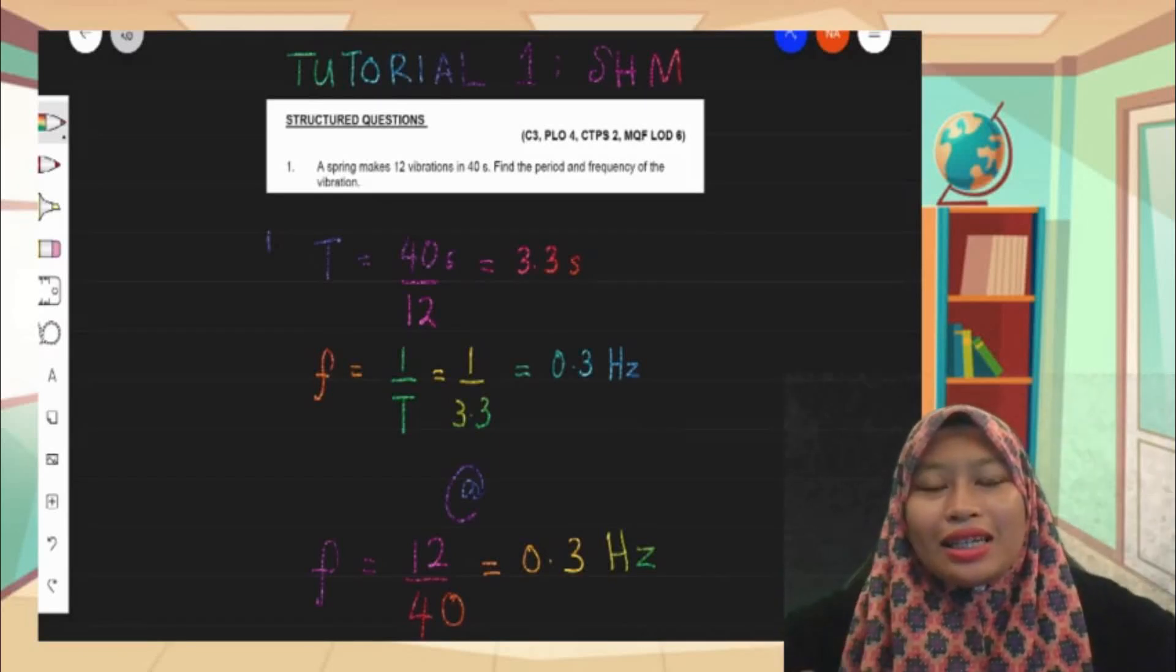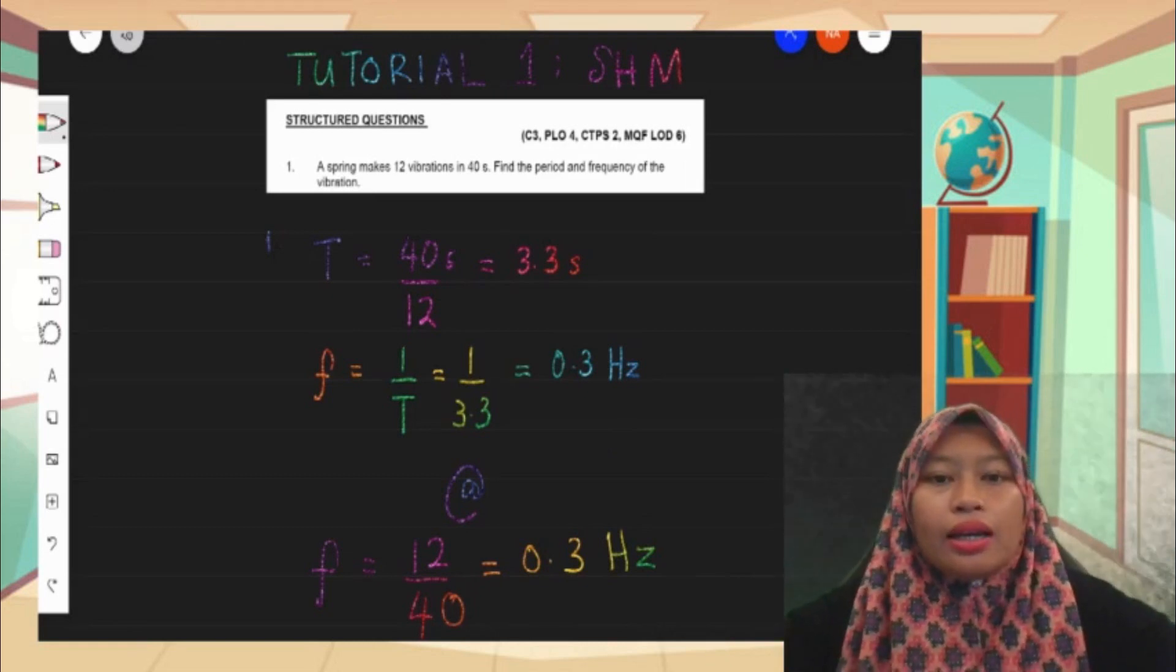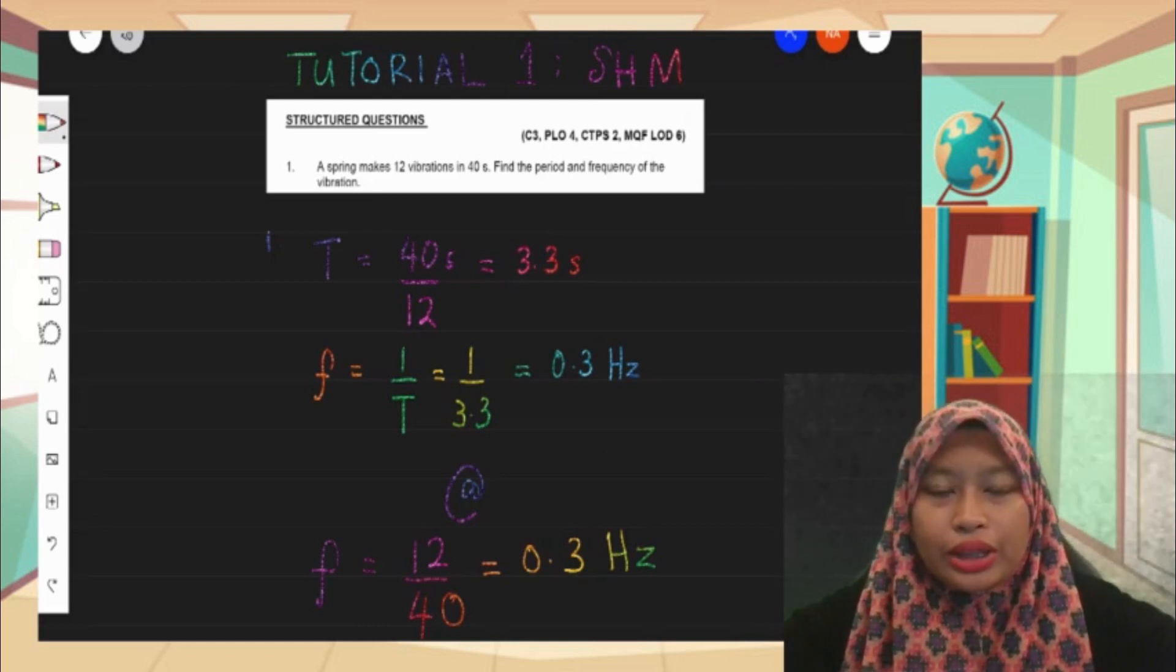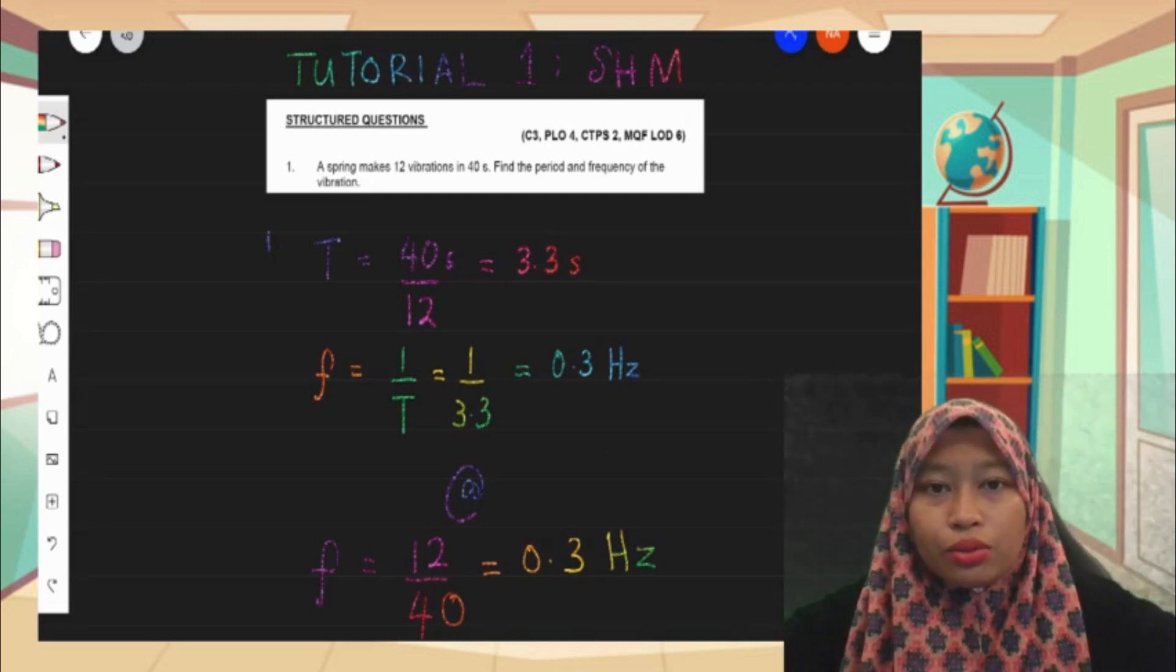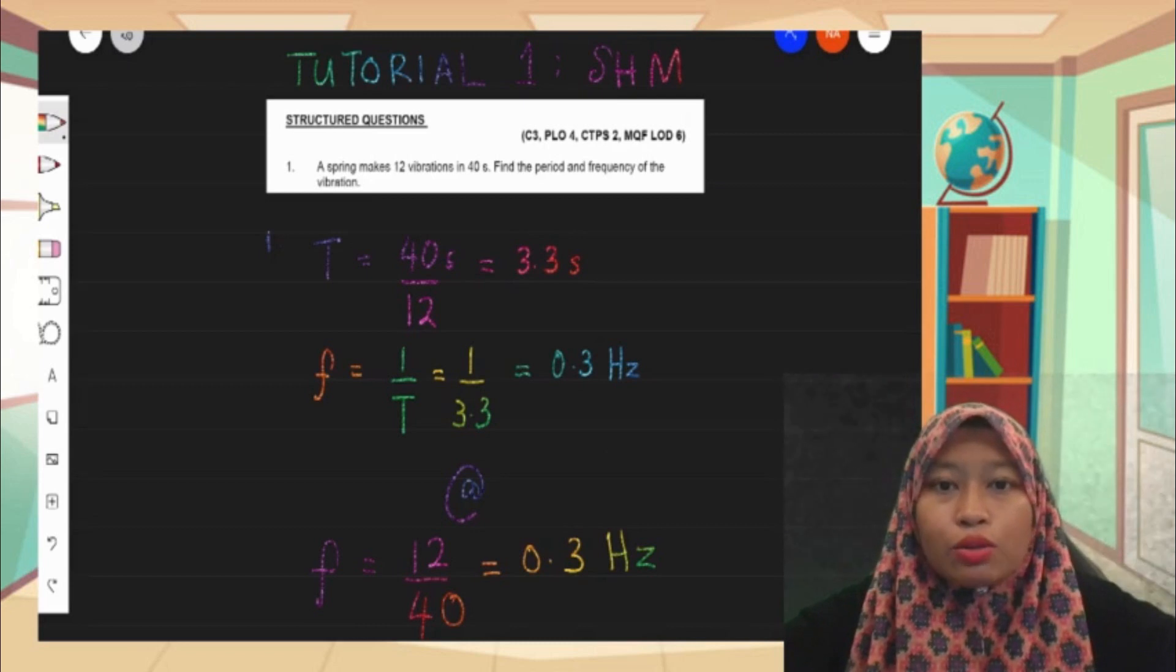Hi, assalamualaikum. So today is our first lesson on tutorial for Semester 2, 2021. This is our tutorial one on simple harmonic motion. As you can refer to your tutorial book, our first question states that a spring makes 12 vibrations in 40 seconds. Find the period and frequency of that vibration.